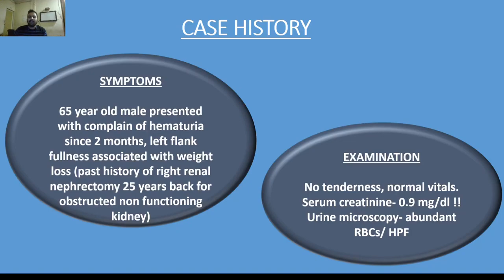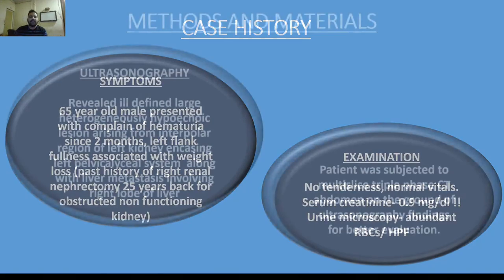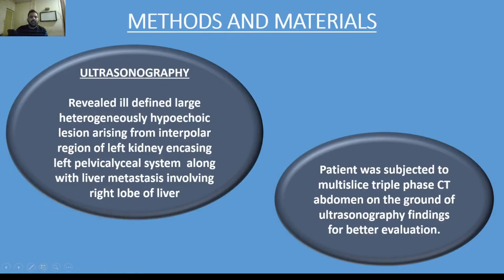On urine microscopy, abundant RBCs were found per high power field. Abdominal ultrasonography revealed an ill-defined large heterogeneously hypoechoic lesion arising from the interpolar region of the left kidney, causing left pelvicalyceal system obliteration along with liver metastasis in the right lobe. The patient was subsequently subjected to multislice triple-phase CT abdomen for better evaluation.